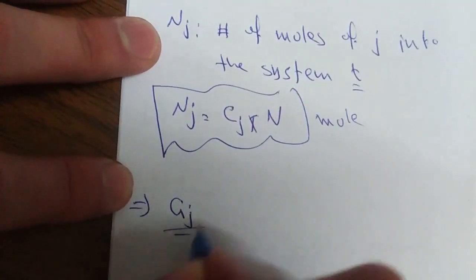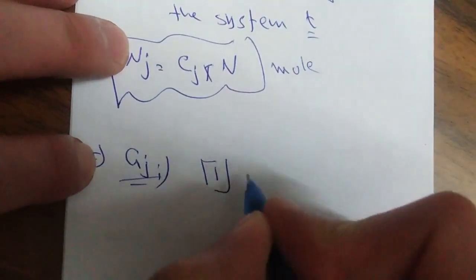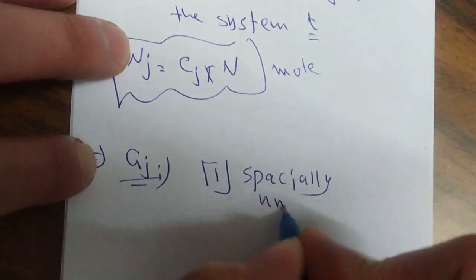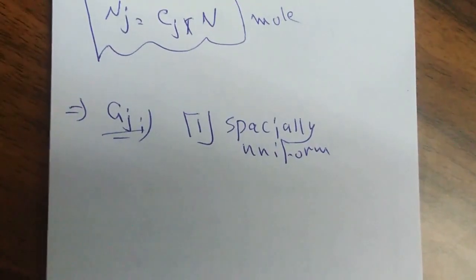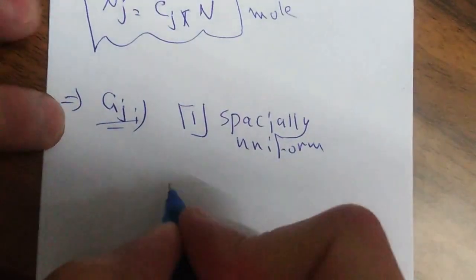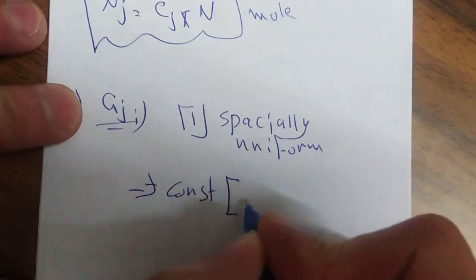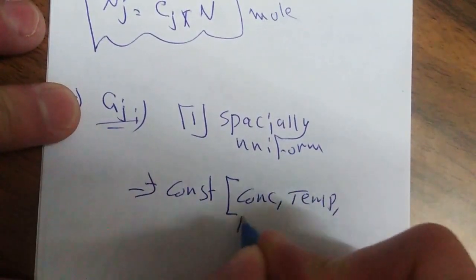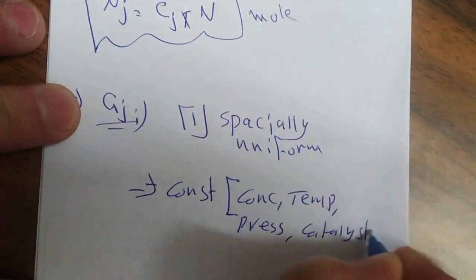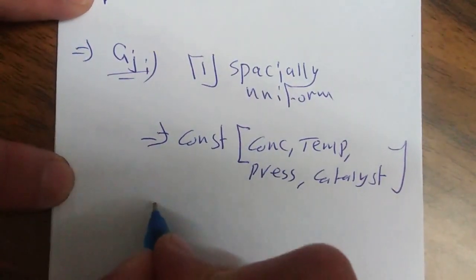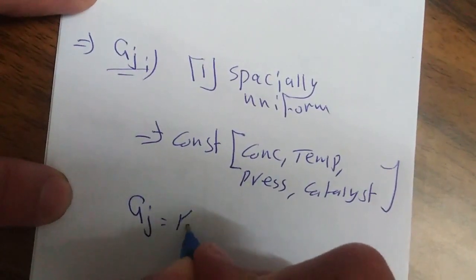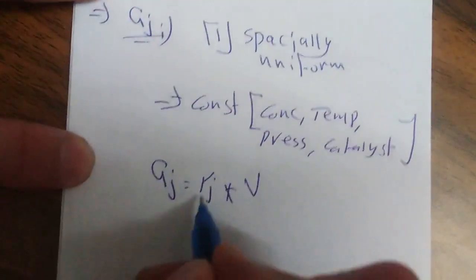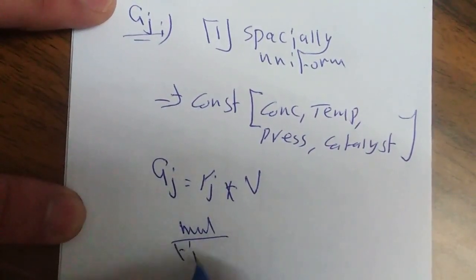بالنسبة للـ generation term، عشان أعرفه لازم نعرف حالتين. الحالة الأولى اللي بنسميها spatially uniform — معناته أن rate of reaction هو constant — وأنا بعرف أن rate of reaction هو function of concentration، temperature، pressure، وcatalyst إذا كنت بتعامل مع heterogeneous reaction. فإذا كان في عندي constant concentration أو temperature أو pressure أو catalyst، فبيكون في عندي spatially uniform. وبقدر أعرف generation هي R_j times Volume، ووحدة r هي mol per time per volume.